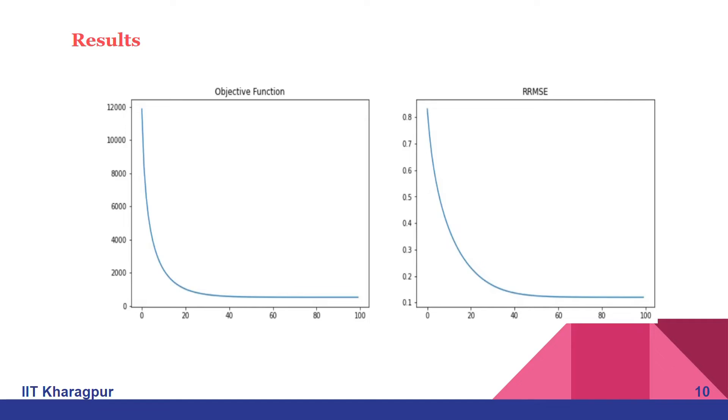It's decreasing when you increase the number of epochs. Initially it is very high, after some epochs it is getting almost the same value. So 20 will be the maximum number of epochs we can try for.